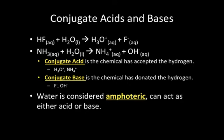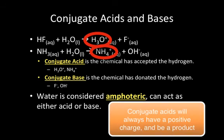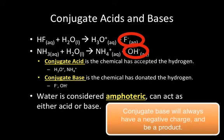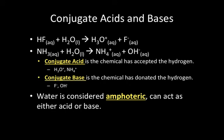We can also identify conjugate acids and conjugate bases. The conjugate acid is the chemical that accepts the hydrogen — in the first equation, H2O is our base, but H3O+ is our conjugate acid. The conjugate base is the chemical that donated the hydrogen — HF is the acid, but F- (which has lost the hydrogen) is our conjugate base.